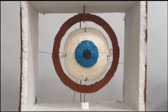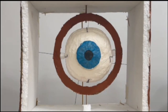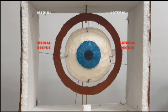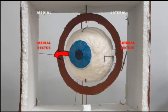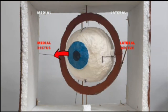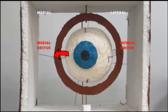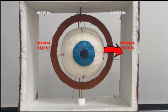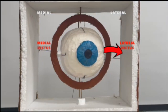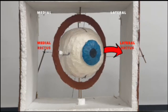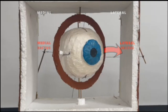Let's understand this with the help of the model. The human eye has muscles known as medial rectus and lateral rectus, which are responsible for causing side-to-side movement of the eyeball. For causing medial movement, the medial rectus contracts, acting as the prime mover, while the lateral rectus acts as the antagonist and allows the movement by relaxing. Similarly, for lateral movement, the lateral rectus acts as the prime mover while the medial rectus acts as the antagonist.